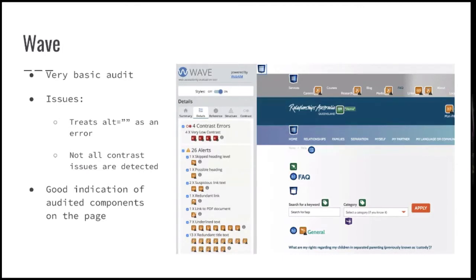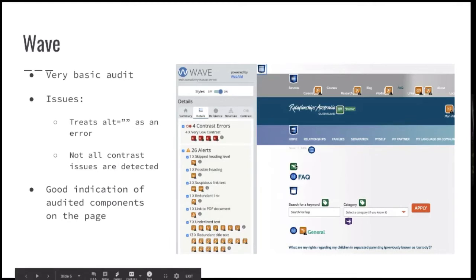First tool is WAVE. It's very popular and quite basic. It has an issue — this is how a website looks when you activate the WAVE plugin. Most of the plugins here are Chrome plugins you just install on top of your Chrome browser. It flags empty alt fields as an error, which is incorrect. It doesn't detect most contrast issues, especially if you have a background image with text on it. But it has a really good indication in the details — what sort of items it went through — and shows you where they are so you can quickly navigate to those items.